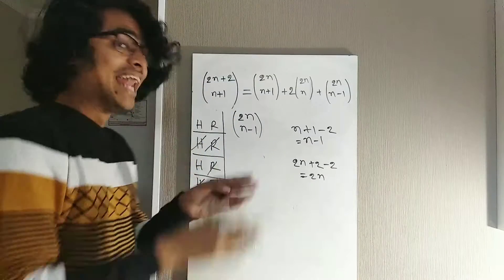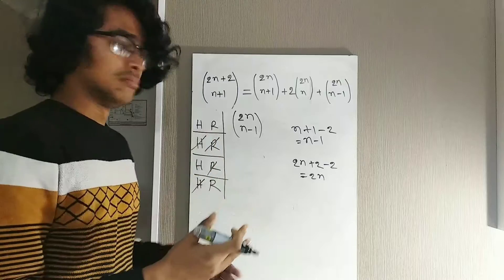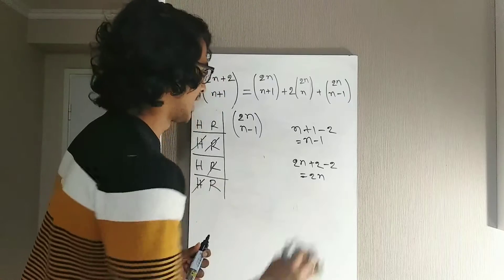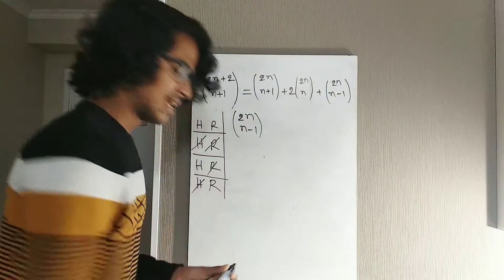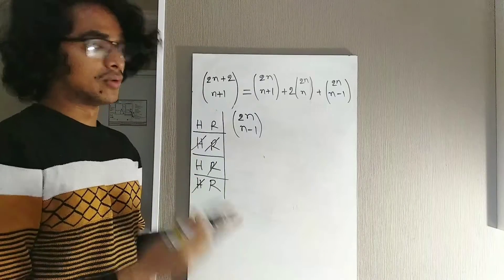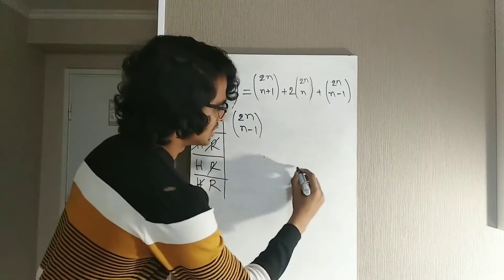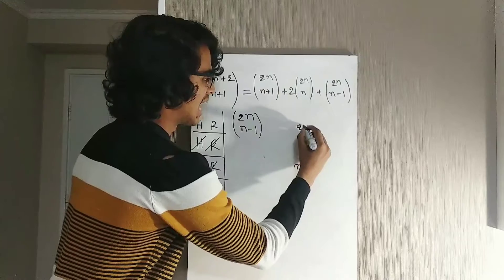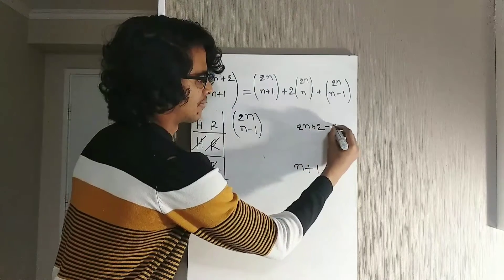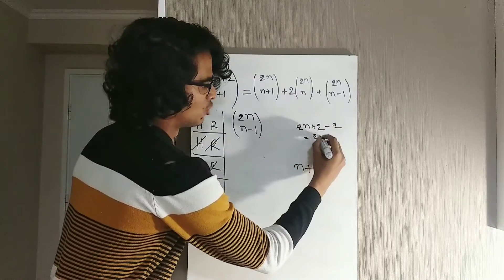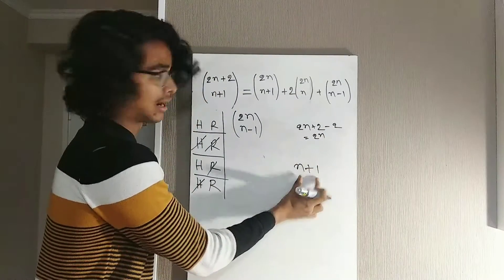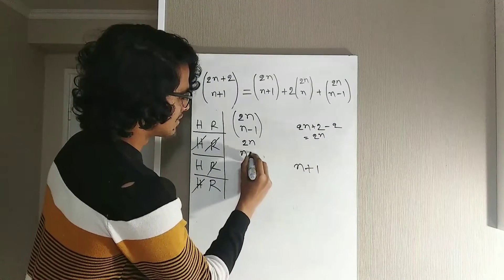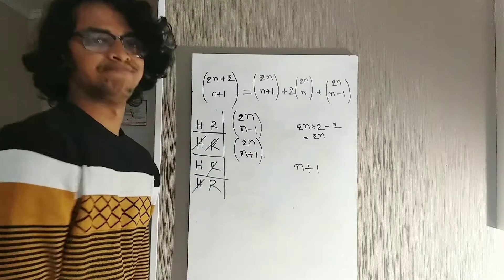Case 2: Neither Harry nor Ron will play in the team — maybe they're injured. In this case, we still need to choose n+1 players, but we subtract Harry and Ron from the squad, leaving 2n players. So we choose n+1 players out of 2n remaining players, which gives us C(2n, n+1) different ways.